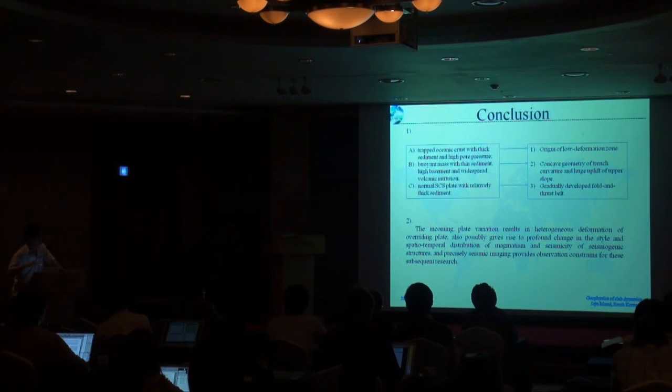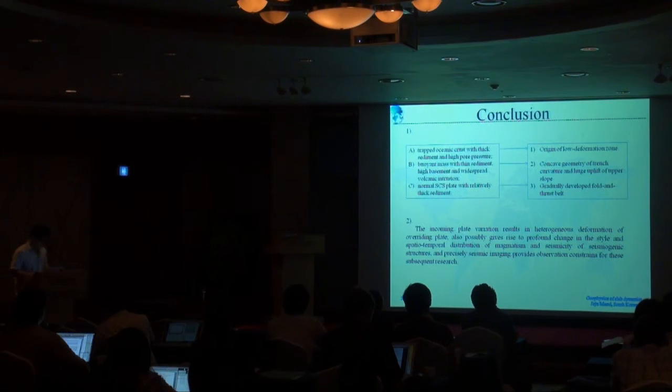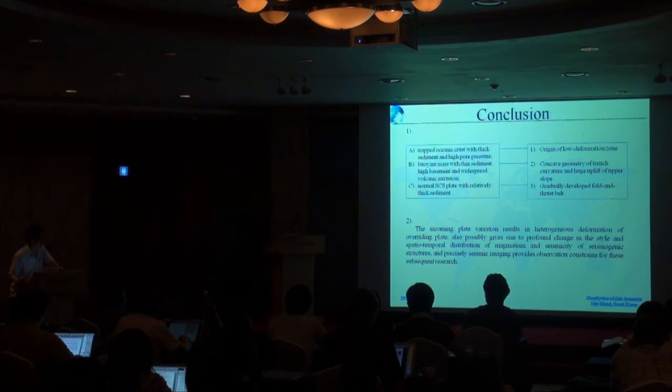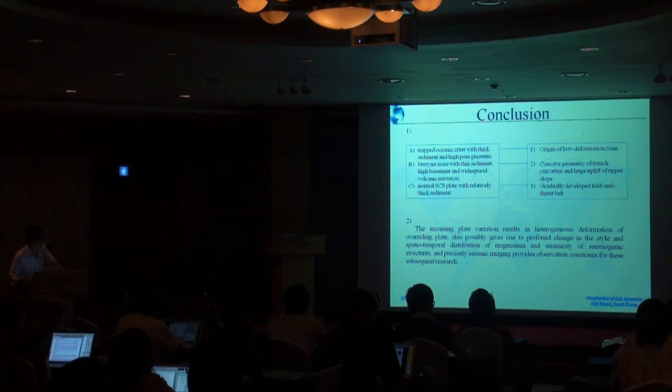This comes to the final conclusion. We separated the incoming plate of the northern Mariana Trench into three units based on the interpretation results of the multi-channel seismic data and the bathymetric morphology. This division is consistent with the deformation character of the accretionary wedges, such as the existence of the low deformation belt and the reentrant of the trench. The incoming plate variations will result in heterogeneous deformation of the overriding plate, and possibly give rise to profound changes in the style and spatial-temporal distribution of magmatism and seismicity of the seismogenic structures. Our pre-stack seismic imaging will provide new constraints for subsequent research.